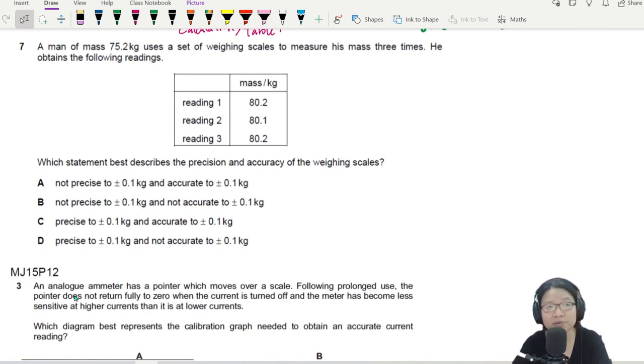A man, 75.2 kg, so this is his mass. Immediately I can draw this out as the true value or the actual value. He uses a set of weighing scales to measure his mass three times and obtains these readings.